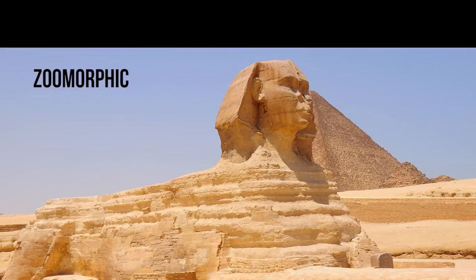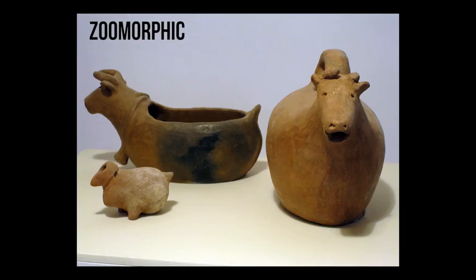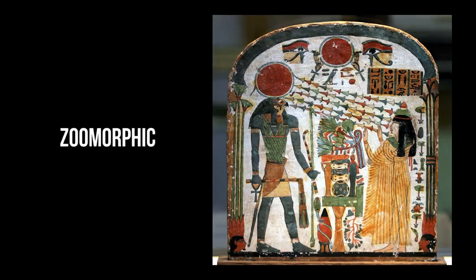Zoomorphic. Zoomorphic means in the form of an animal. The word zoomorphic is used to describe figures, usually gods, with animal-like qualities.